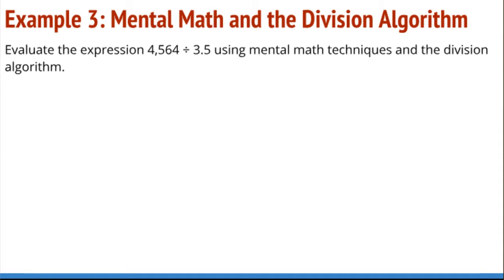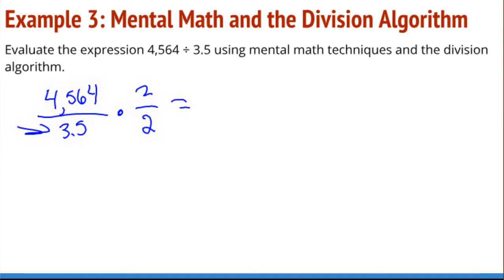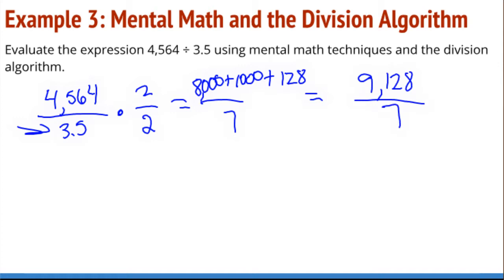Taking a look at another example working through the division algorithm: we've got 4,564 divided by 3.5. Instead of multiplying by powers of 10, I can double — because that's a half — to get a divisor of 7. Doubling 4,000 gives 8,000, doubling 500 gives 1,000, and doubling 64 gives 128. So I've got 9,128 divided by 7.